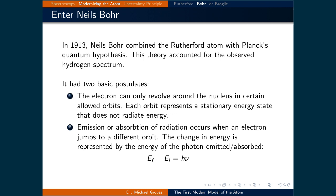The second one was the emission or absorption of radiation occurs when an electron jumps to a different orbit. The change in energy is represented by the energy of the photon emitted or absorbed. And this is characterized as the energy final minus the energy initial is equal to h nu, being the energy of the photon.